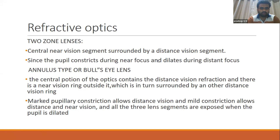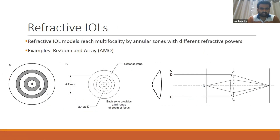In the annulus or bull's-eye type, the center portion of the optic contains the distance vision refraction, with a near vision ring outside it, surrounded by another distance vision ring. Marked pupillary constriction allows distance vision, mild constriction allows both distance and near vision, and all three segments are active when the pupil is dilated. Examples of refractive IOLs include ReZoom and Array.